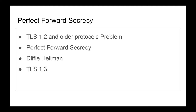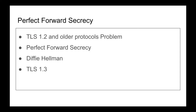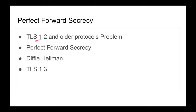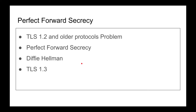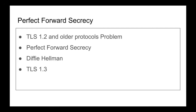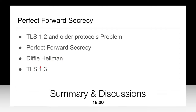We're going to go through TLS 1.2 and older — SSL 3, TLS 1.1 — all of which had the problem of lacking perfect forward secrecy. I'll explain what perfect forward secrecy actually means, talk about Diffie-Hellman, and then finally cover TLS 1.3.